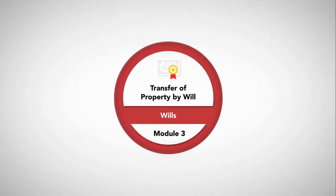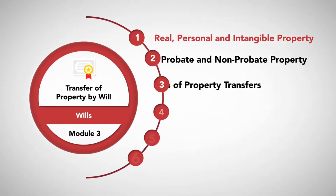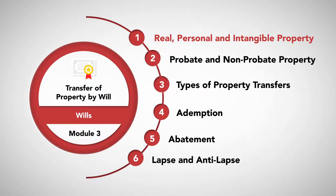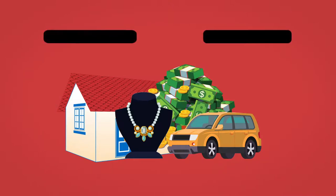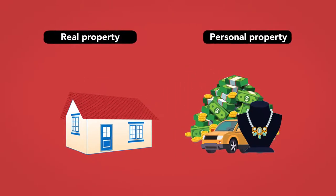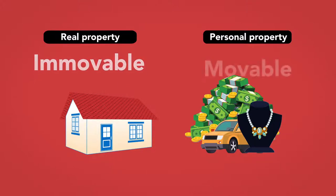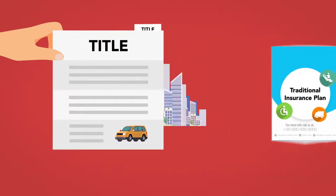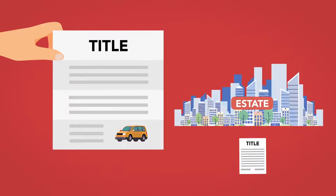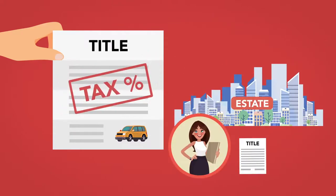Module 3 – Transfer of Property by Will. Real, personal, and intangible property. A person's property or assets can be divided into two broad categories – real property and personal property, sometimes referred to as immovable and movable property. A property's classification affects the way its title is transferred, the cost and type of insurance that can protect it, how it passes through an estate, and sometimes to whom it may be transferred, how it is taxed, and more.